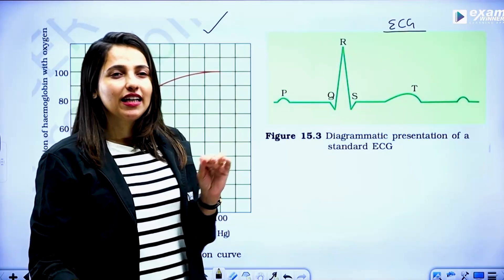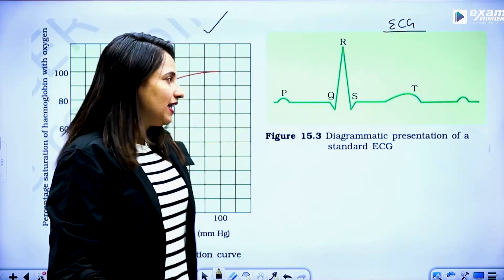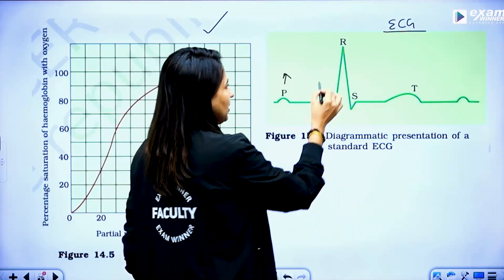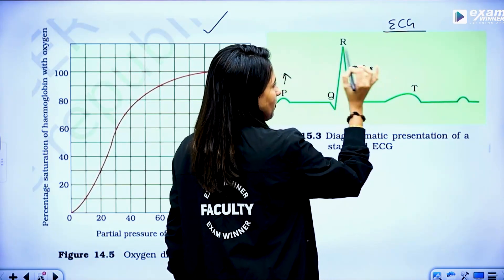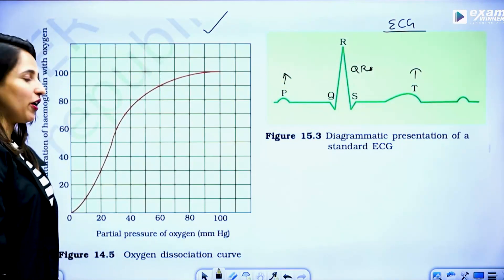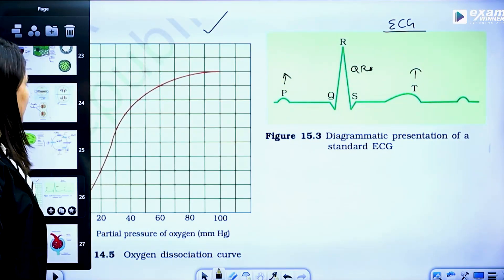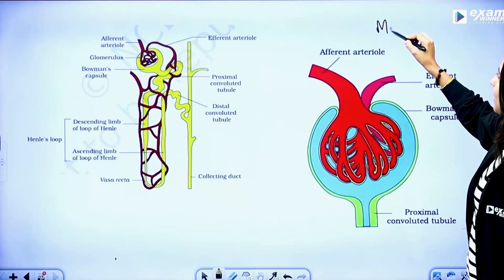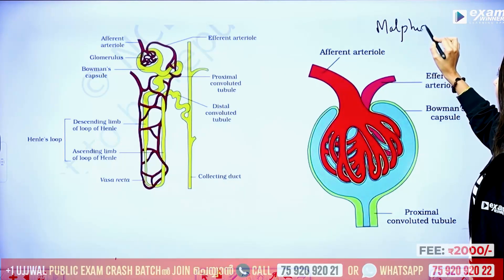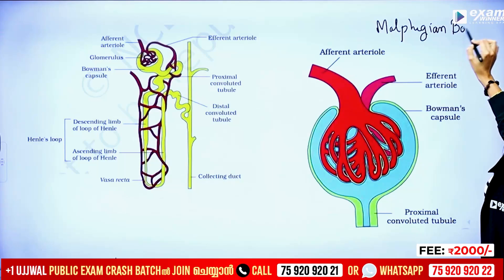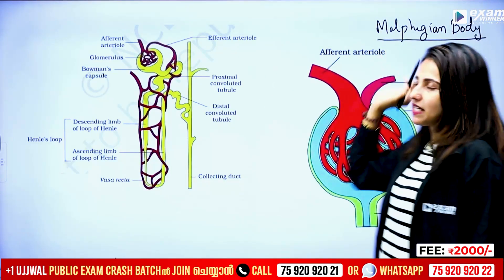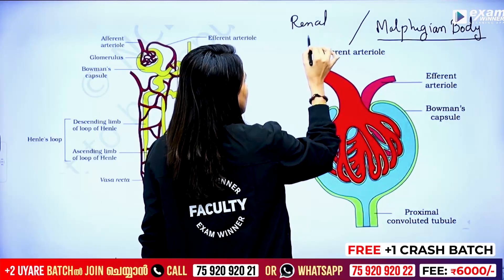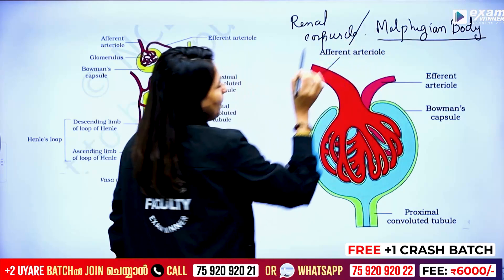Electrocardiogram — ECG graph machine. P wave: auricular/atrial depolarization. QRS: ventricular depolarization. T wave: ventricular repolarization. Then last one, excretion. This is called Malpighian body — we call it renal corpuscle. Identify the renal corpuscle.